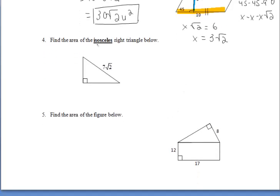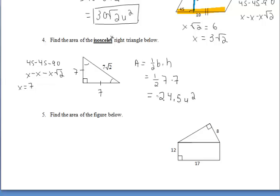For number 4, we want to find the area of the isosceles right triangle, keyword isosceles, which means that it's a 45, 45, 90 right triangle, which means that both legs have a length of 7. Doing one half base times height to find the area of the triangle, we're left with 24 and a half units squared.